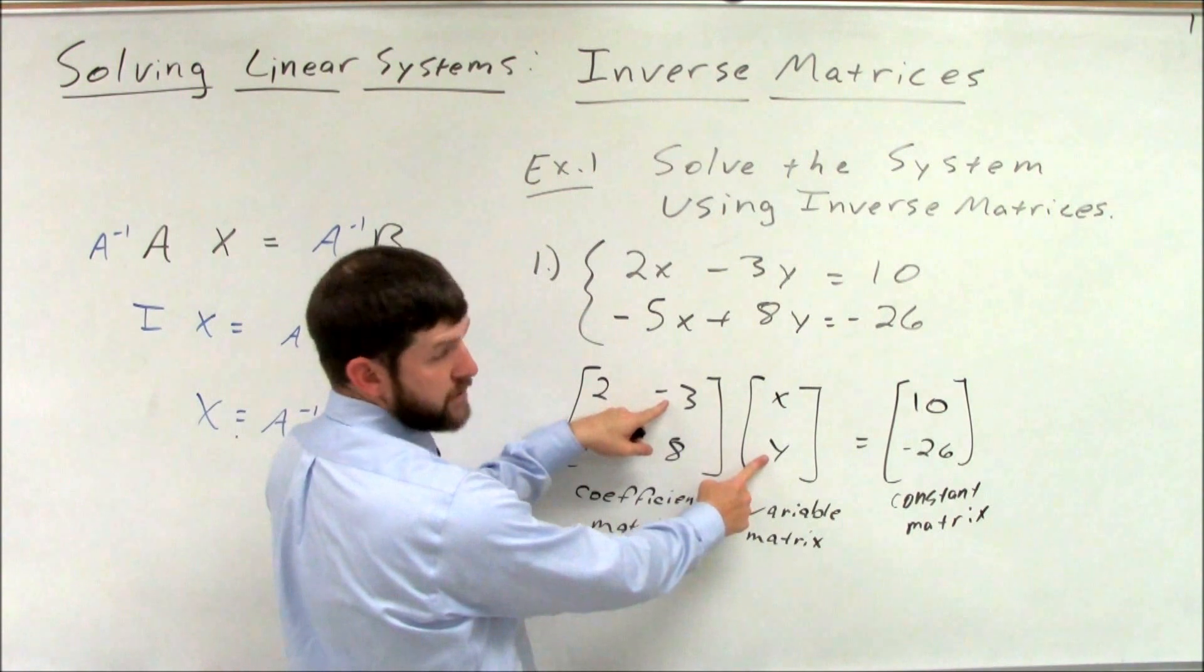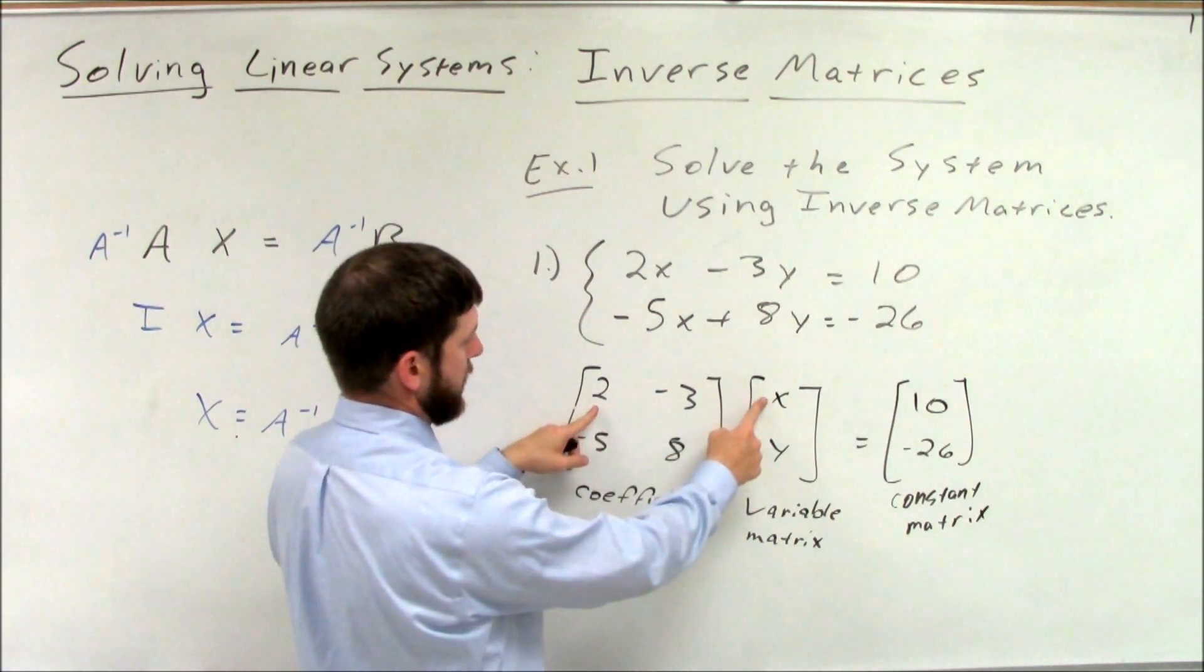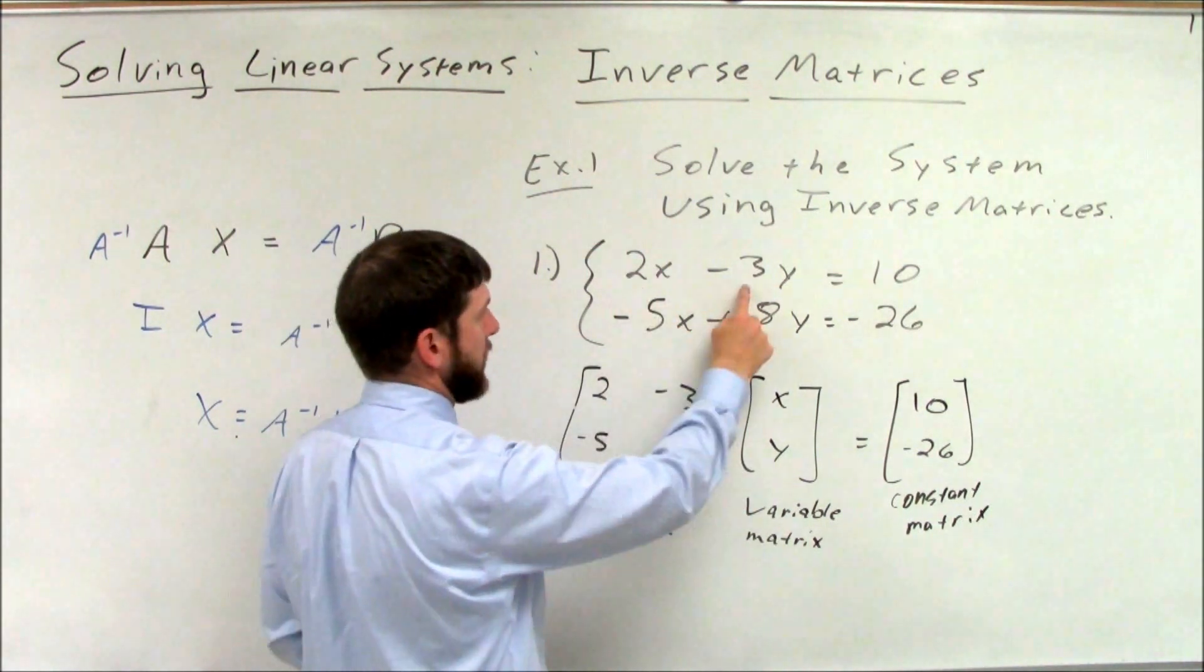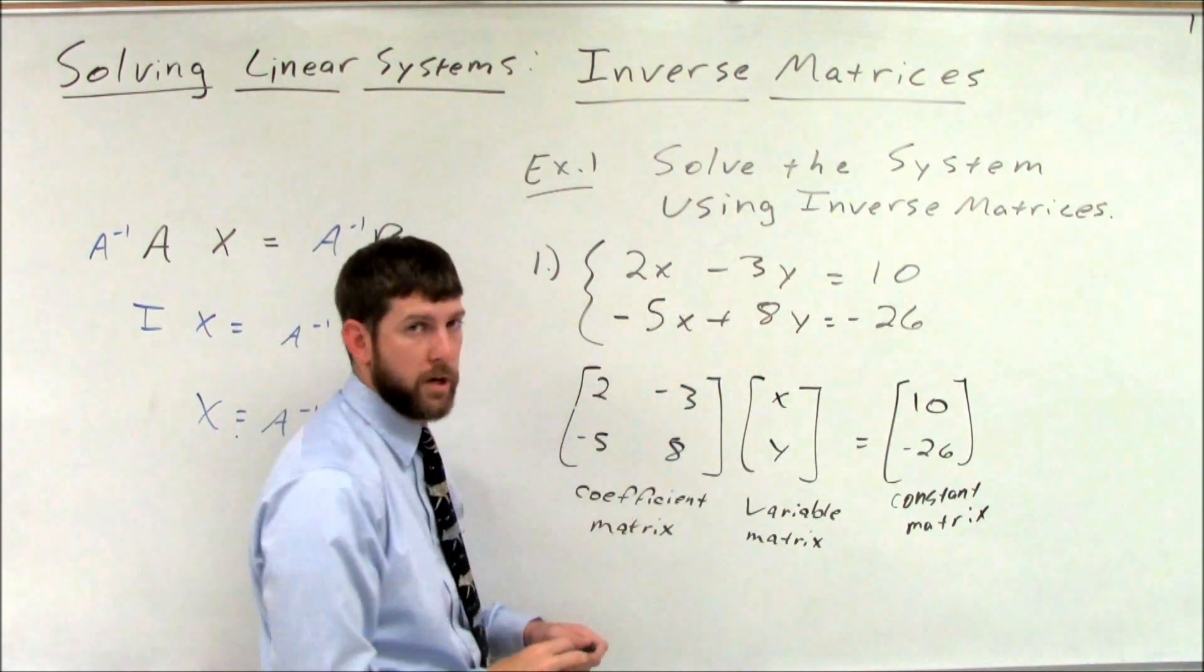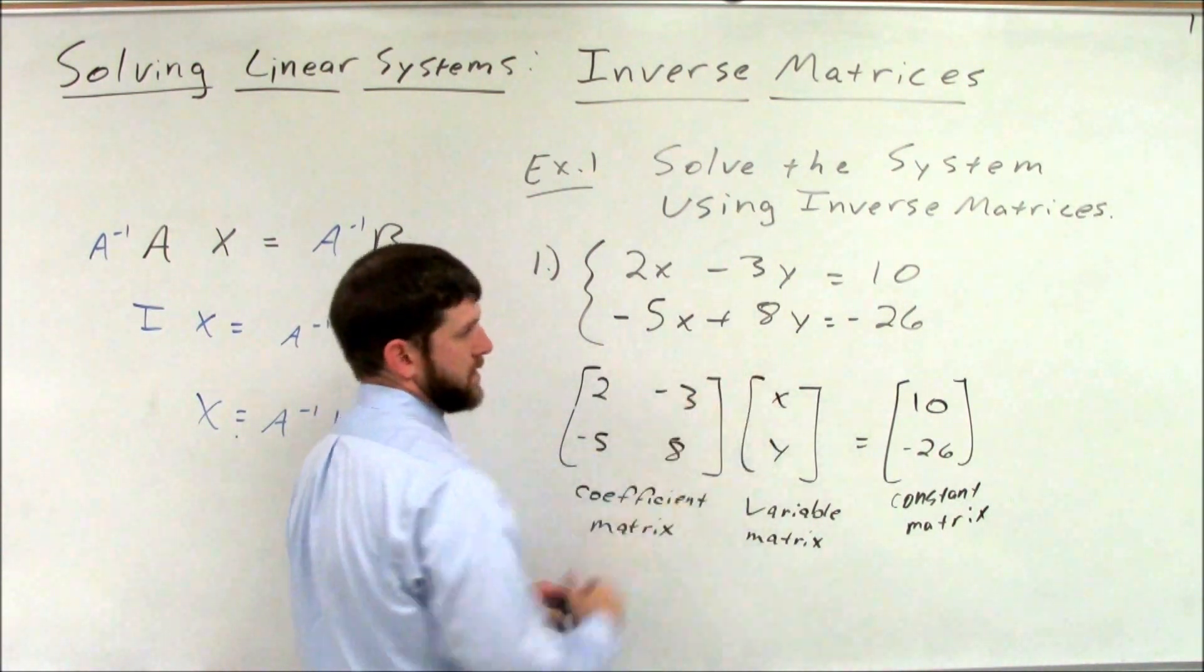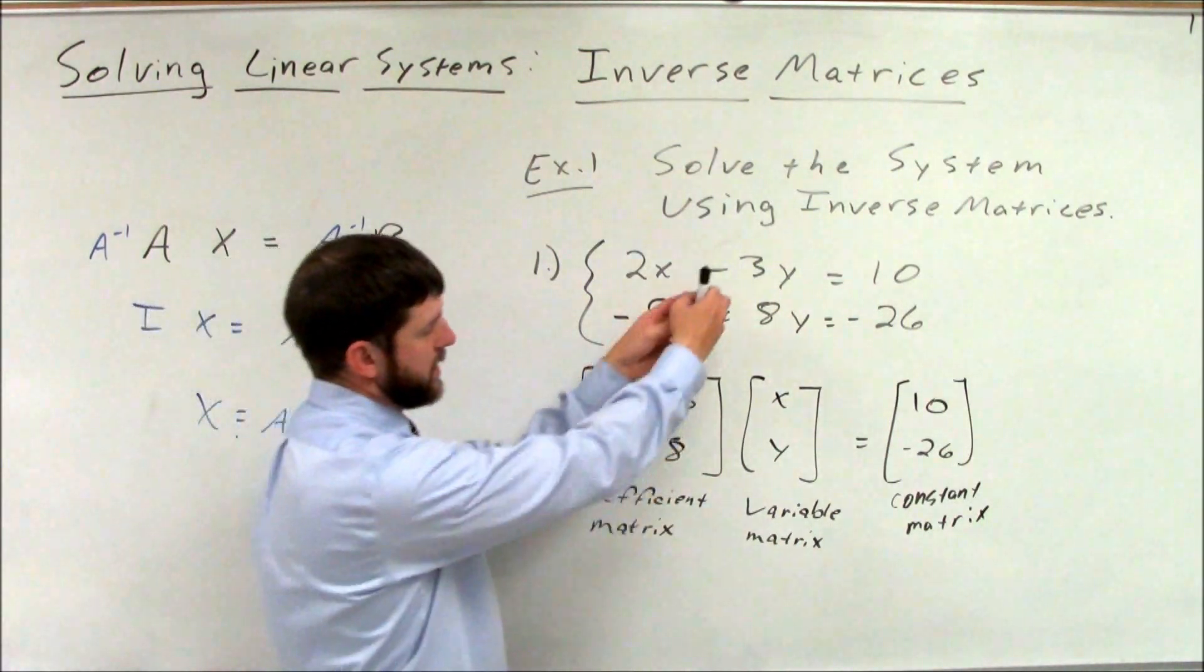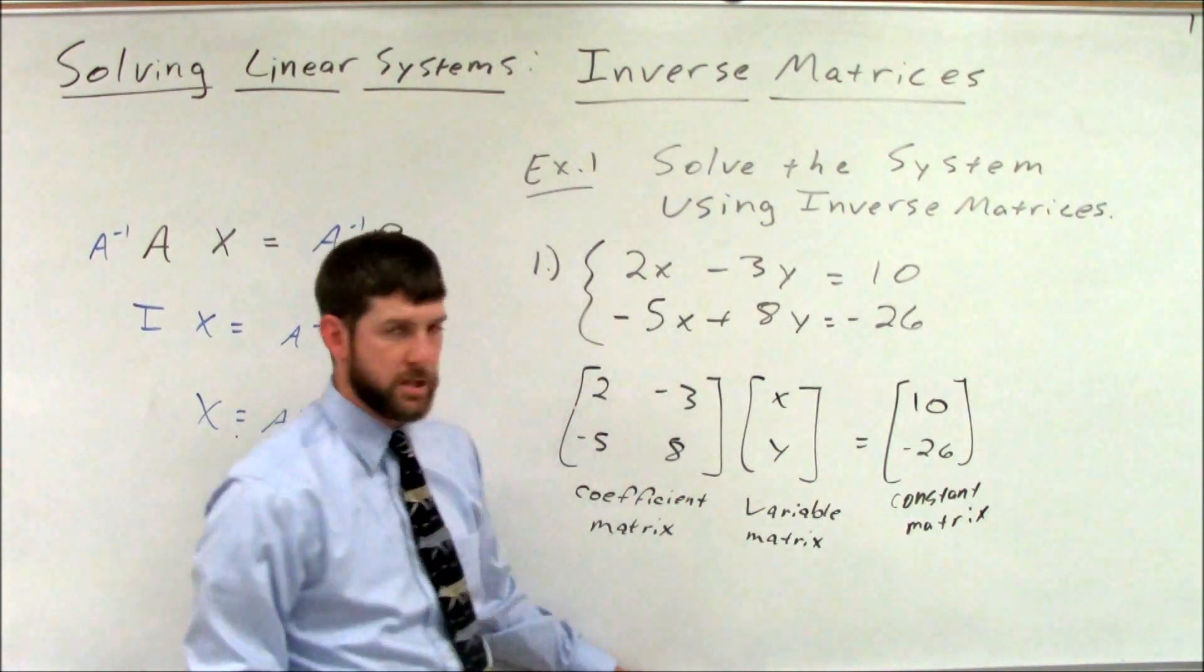Row one, column one, 2x minus 3y. 2x minus 3y is row one, column one here. Because this is all one expression. Row two by column one, negative 5x plus 8y gives us that product, or that sum of products. So this is kind of taking this sum of products and breaking it apart into the two matrices that created it.